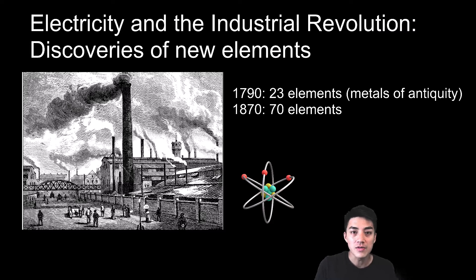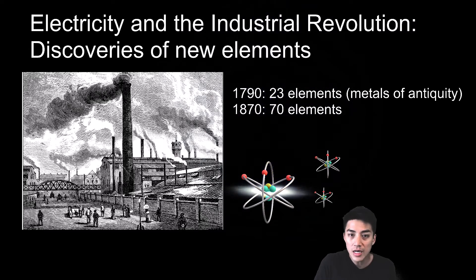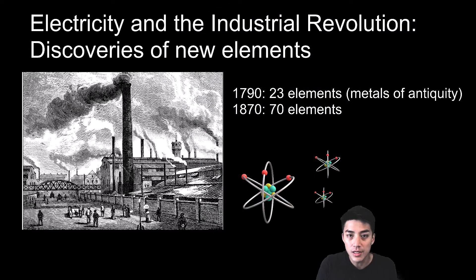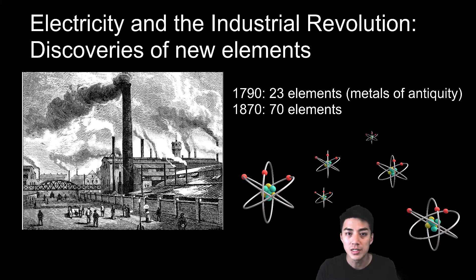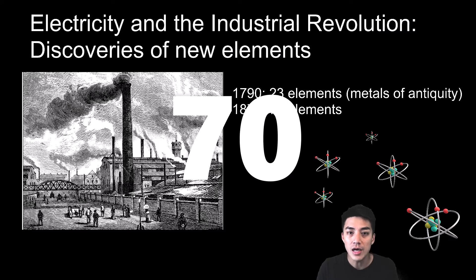But by 1870, with the invention of electricity, we were able to break compounds down into their individual elements. And along with the Industrial Revolution, where we're making new products like soaps and dyes, we're creating new compounds and discovering new elements. The list had grown to 70 elements.